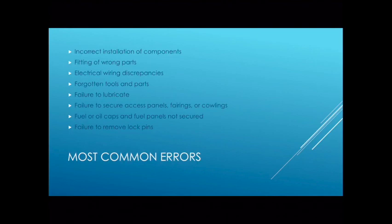Incorrect installation of components — we didn't put it in right. Using the wrong parts. Issues with electrical wiring, including when we miswire something. Forgotten tools and parts that are left inside an airplane after it's been repaired. Failure to lubricate items. Failure to secure access panels, fairings, cowlings, inspection panels, cargo doors, fuel or oil caps, and fuel panels that are not secured. And failure to remove locking pins, which is something you'll talk more about with Ed during ground handling.